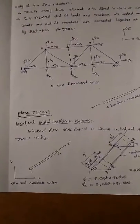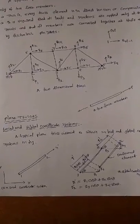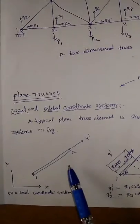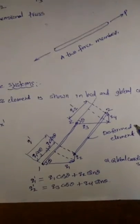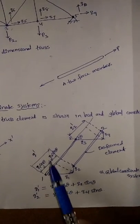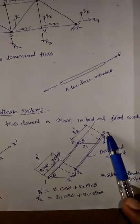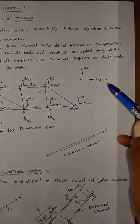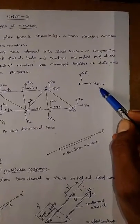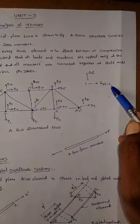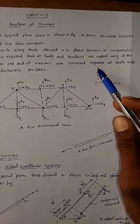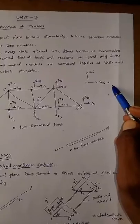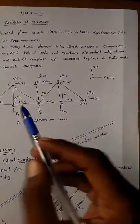Next is the plane truss and the local and global coordinate system. A typical plane truss element is shown in figure with local and global coordinates. The displacements are q1, q2, q3, and q4. For the x-direction, the degree of freedom index is q(2i−1), and for the y-direction it is q(2i). For example, for i=1: q1 and q2; for i=2: q3 and q4 for the second node.